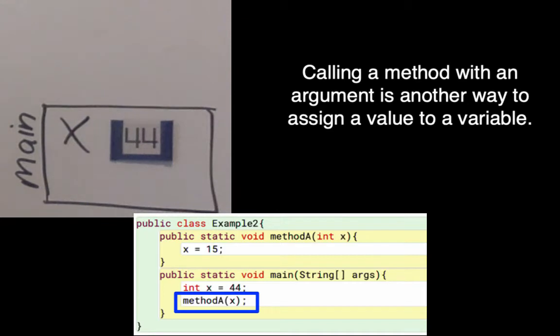That next line says methodA and in parentheses it has x. So that's going to be calling the method A and it's going to pass it an argument and it's going to pass the value 44. So when I make a method call, I draw another stack frame.